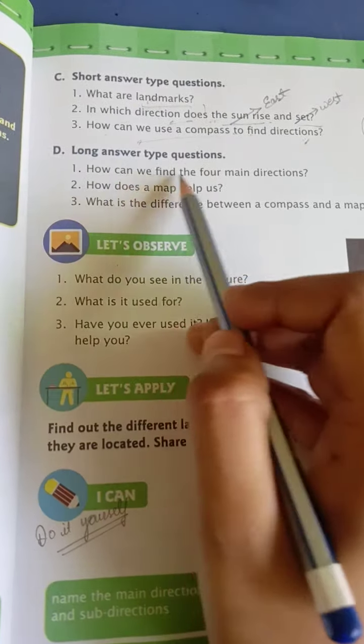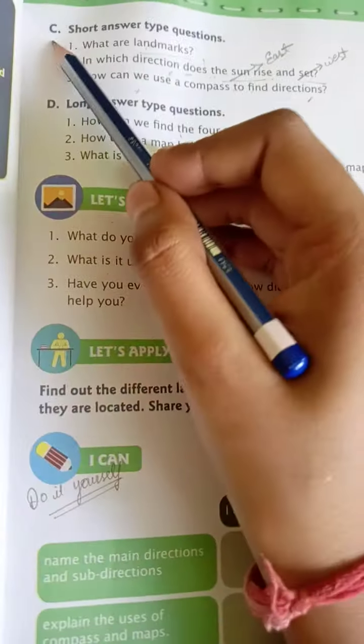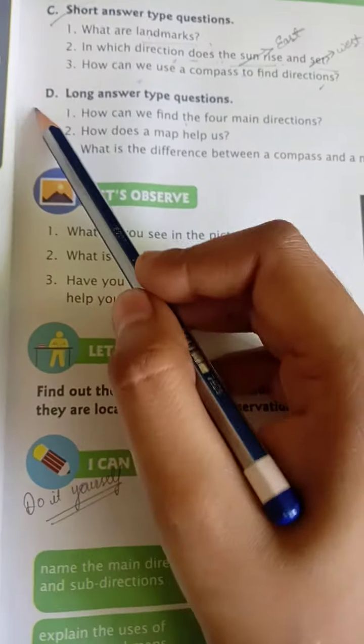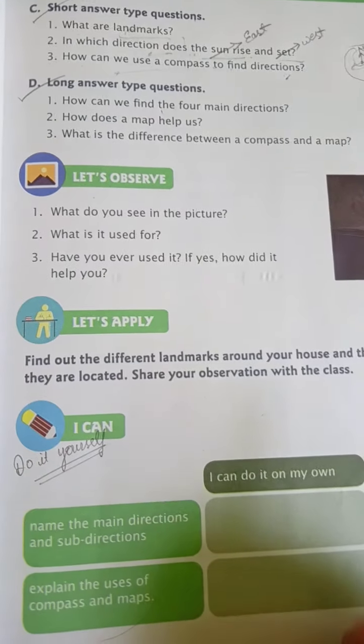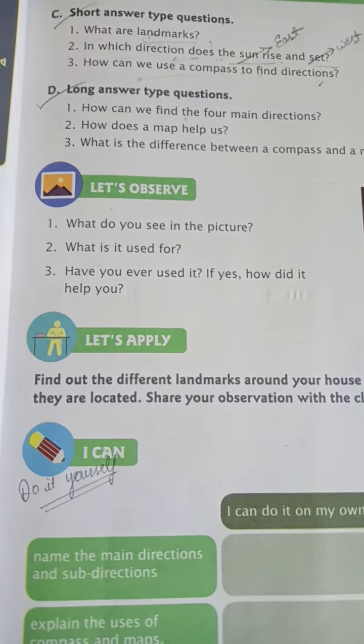How can we find the four main directions? Using compass. This is all about today. I will send you notebook work - short answer and long answer. Do it in your notebook. Thank you.